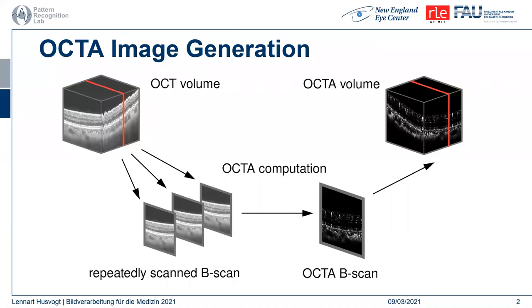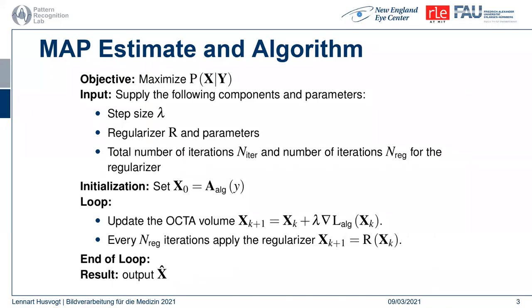We derived a new MAP estimate-based data consistency term for the reconstruction and denoising of optical coherence tomography angiography volumes. Often, OCT-A is denoised using simple operations like median filters, but we thought this process could be improved using Bayesian statistics.